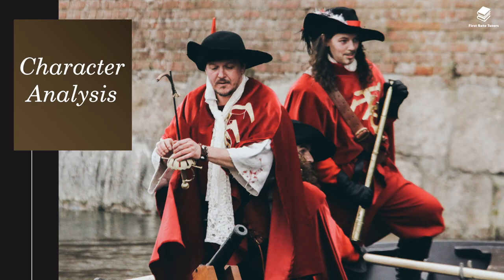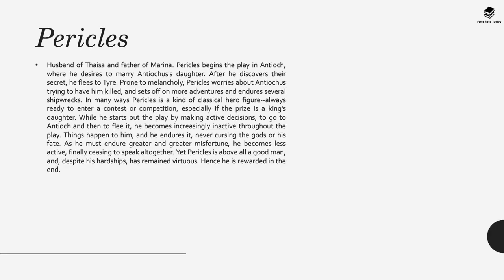Now for a bit of character analysis. Pericles is the husband of Thaisa and father of Marina. He begins the play in Antioch where he desires to marry Antiochus's daughter. After discovering the secret, he flees to Tyre and is prone to melancholy. In many ways Pericles is a classical hero figure, always ready to enter a conquest or competition, especially if the prize is a king's daughter. While he starts out making active decisions, he becomes increasingly inactive throughout the play — things happen to him and he endures it, never cursing the gods or his fate. As he must endure greater misfortune he becomes less active, finally ceasing to speak altogether. Yet Pericles is above all a good man and, despite his hardships, remains virtuous — hence he is rewarded in the end.